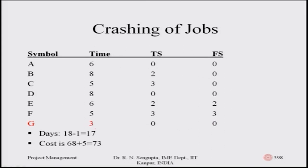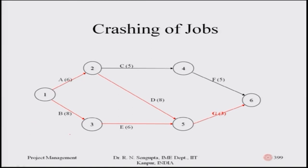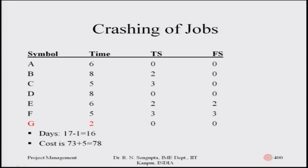We continue reducing G: from four to three, the cost increases by eight units — from seventy-one to seventy-nine — and the duration goes from eighteen to seventeen. Then G is reduced further from three to two: cost increases by another eight units — from seventy-nine to eighty-seven — and the duration goes from seventeen to sixteen.